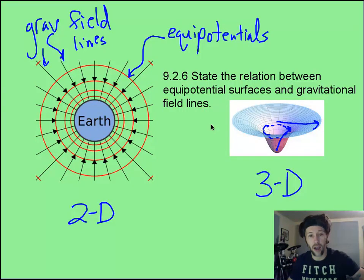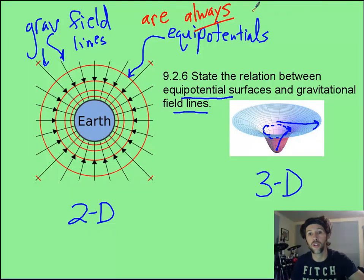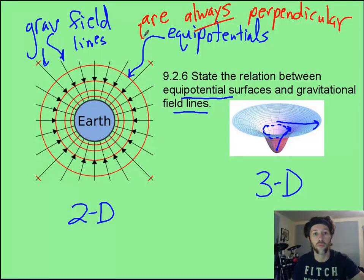And one last bit, asking about the relationship between your equipotential surface and gravitational field lines. Maybe it's obvious, but perhaps it is not, that these are always, always, always, always perpendicular to each other. In other words, there's always a 90 degree angle between every field line and every equipotential.